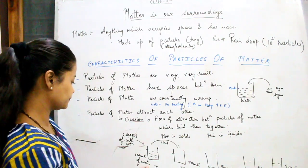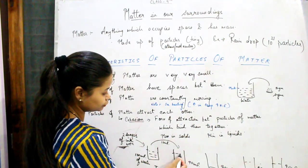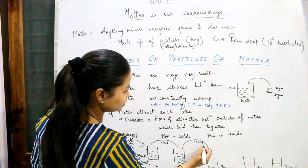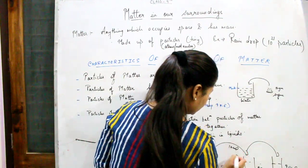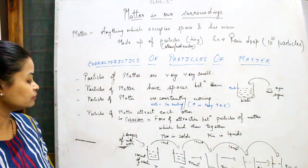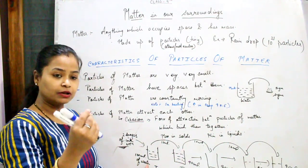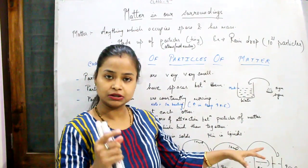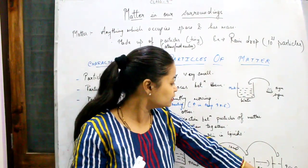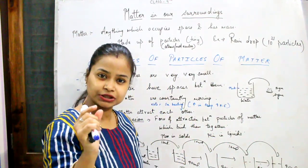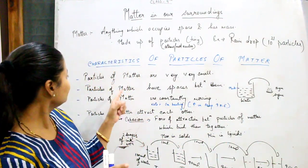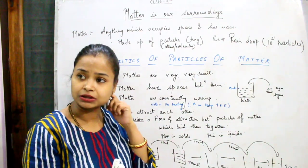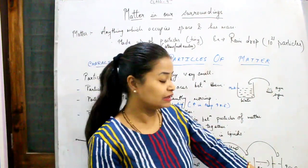The solution becomes bluish in color. From the first beaker, take 10 ml of the solution into the second beaker. From the second beaker, add 10 ml into the third beaker — similar process for the fourth and fifth. This process is known as dilution. We observe that in the first beaker the color was dark blue; as we dilute, the blue color lightens but does not disappear. Even in the last beaker, you can observe a lighter shade of blue, which shows that the particles of matter are very, very small — the ink drops themselves consist of particles which split up to show color even in the fifth beaker.